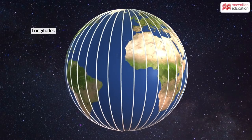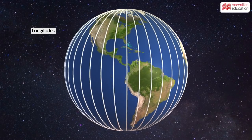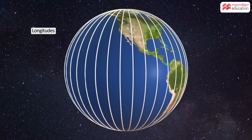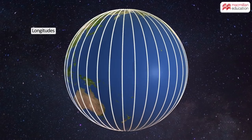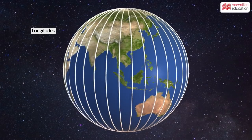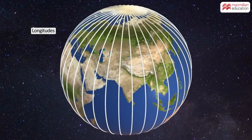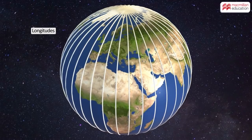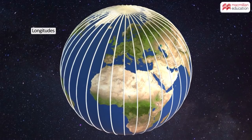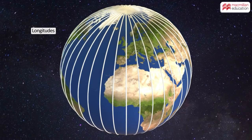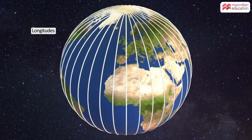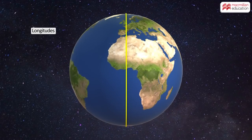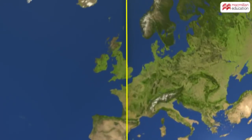Longitudes, or meridians, are imaginary lines drawn between the two poles. They divide the earth into 360 equal segments, like that of an orange. The 0 degree longitude passing through Greenwich in England is called the prime meridian.